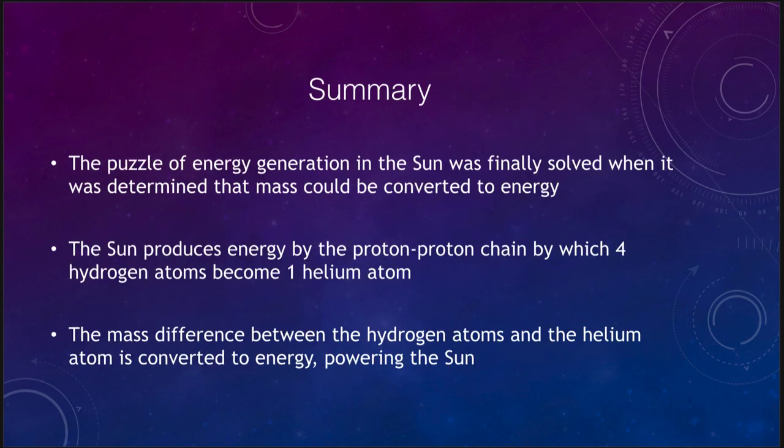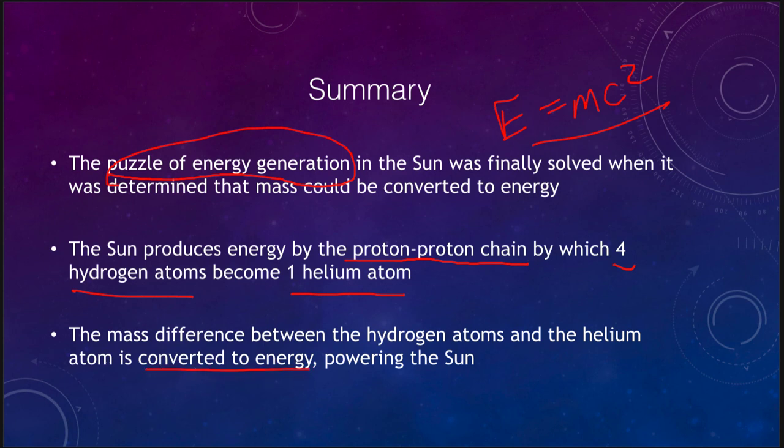Let's finish up with our summary. The puzzle of energy generation in the Sun was solved by Einstein telling us there is a relationship between matter and energy. Mass is just another form of energy, and we can convert mass to energy, giving us large amounts of energy. The Sun produces energy by using the proton-proton chain, which converts four hydrogen atoms into one helium atom. The mass difference is converted fully to energy by Einstein's equation, and that is sufficient to power the Sun for 10 billion years.